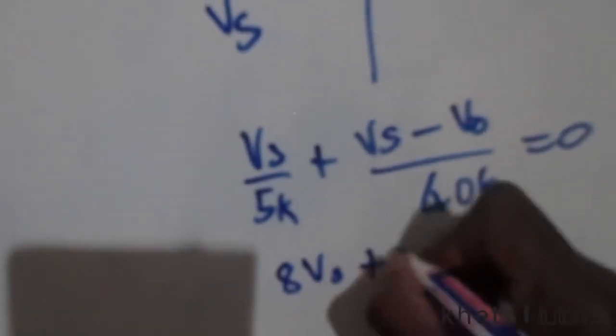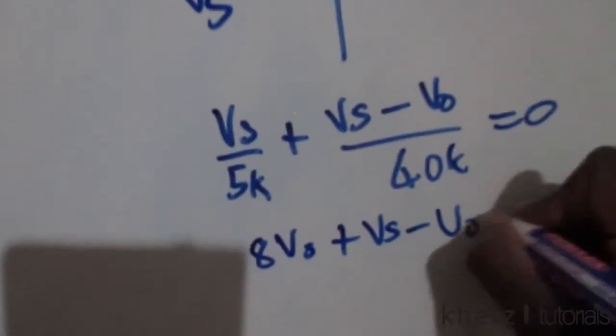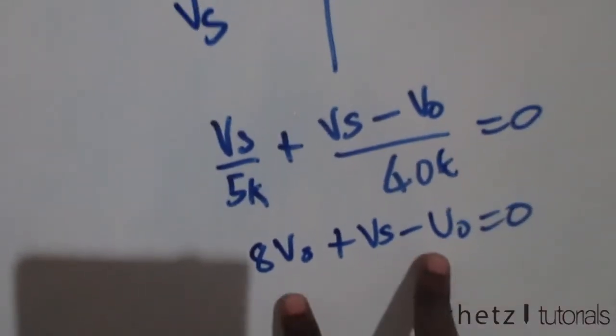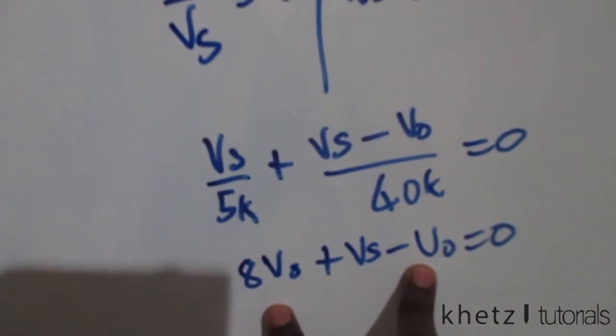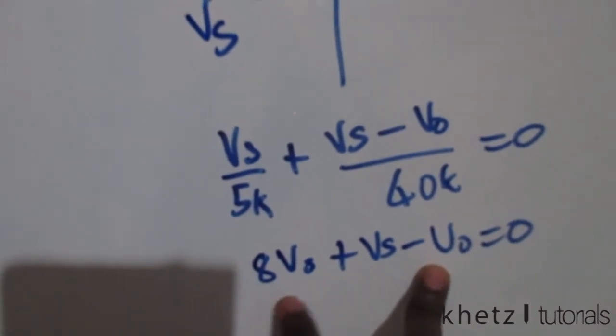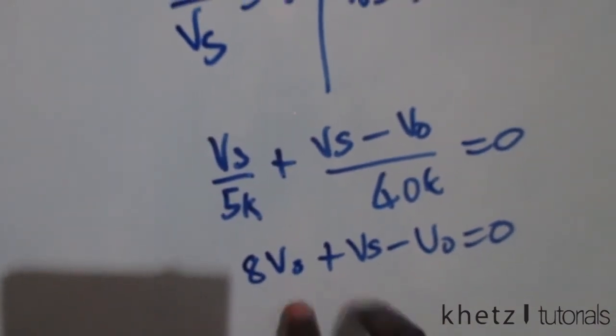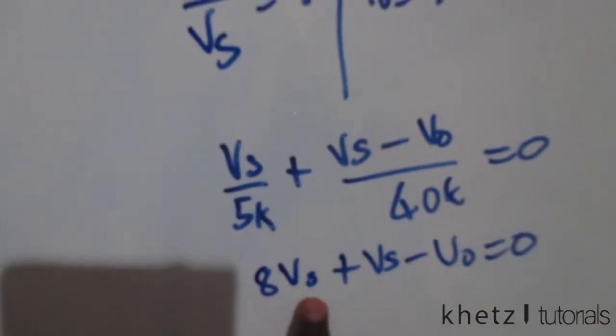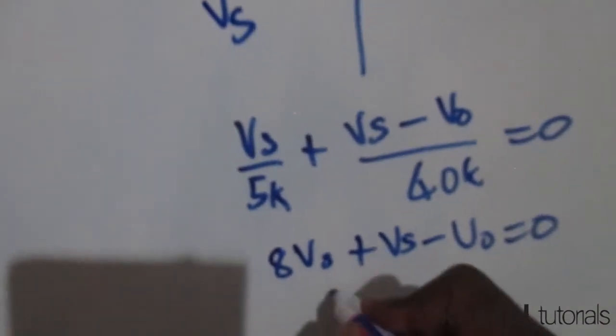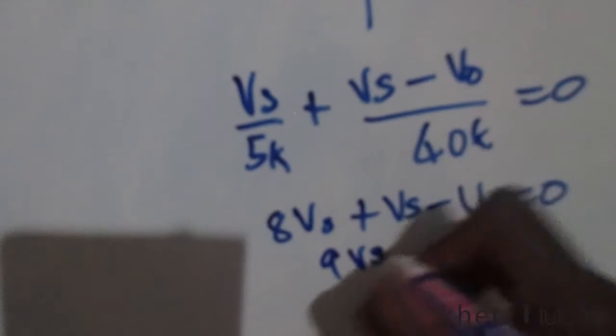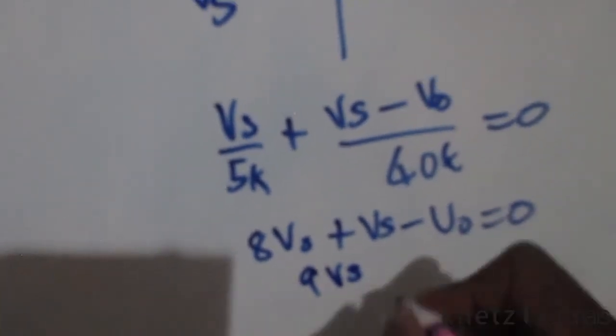That equals zero. Adding these two, this is 8vs and this is vs, so we're going to have 9vs. Taking this vo to the other side of the equal sign will make it positive.